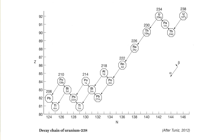Uranium 235, on the other hand, lacking these extra three neutrons, is much more unstable and will suffer decay. The phenomenon of radioactivity stems from the fact that nuclei are unstable, and when they decay they do so by emitting alpha or beta radiation.